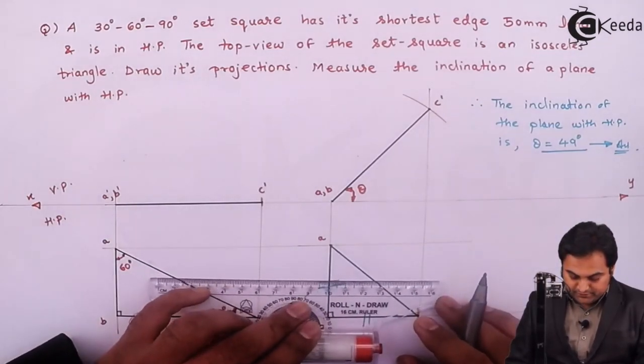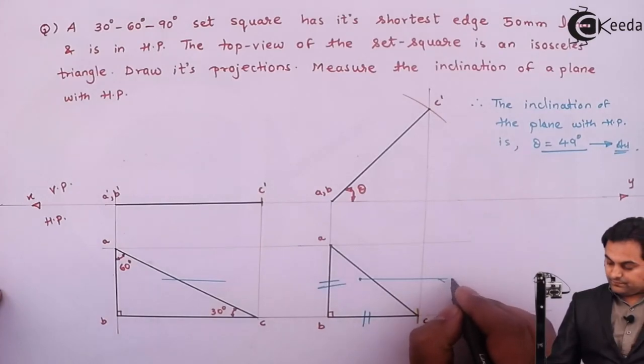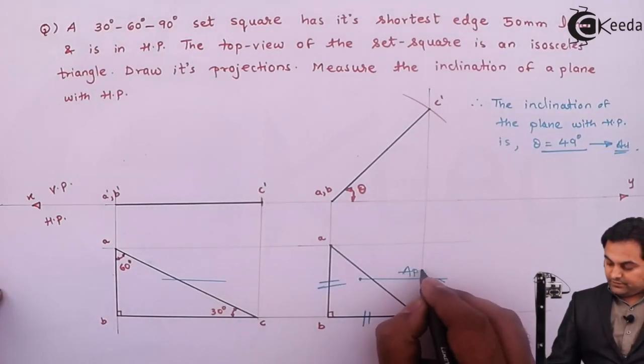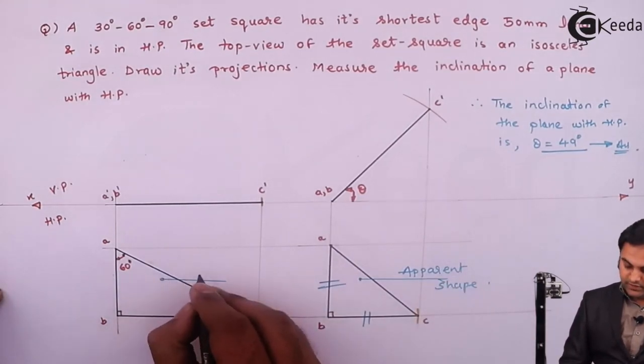So I can say that this is the apparent shape. And here we have the true shape.